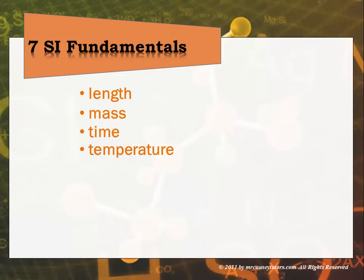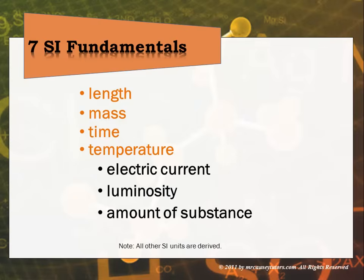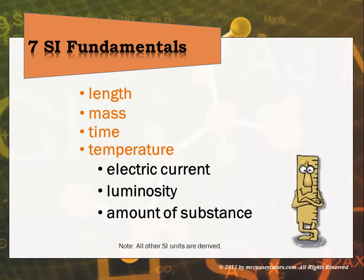The seven SI fundamental units include the top four — length, mass, time, and temperature — and then electric current, luminosity, and the amount of substance. The top four are very important to us as chemists at this level, and at the end of the year we will be talking about the amount of substance. Anything beyond these seven is considered a derived unit.